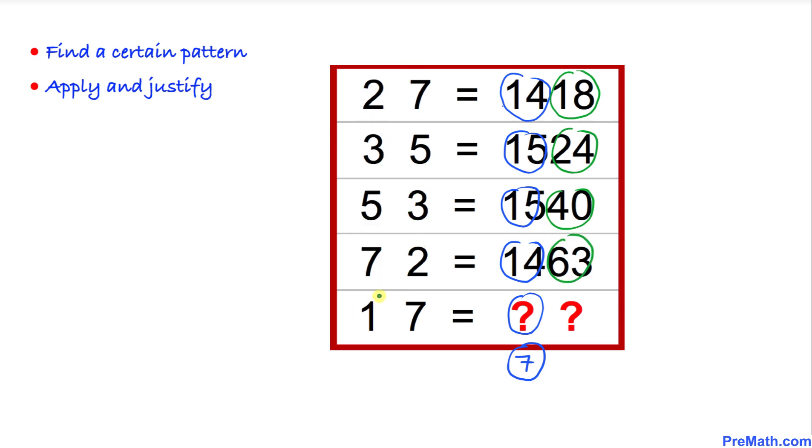And finally, let's focus on 1 and 7. We're going to add them: 7 plus 1 is 8. Then we multiply by the first number, 1. 1 times 8 is 8. So our complete answer is going to be 78.